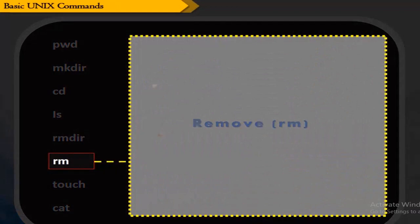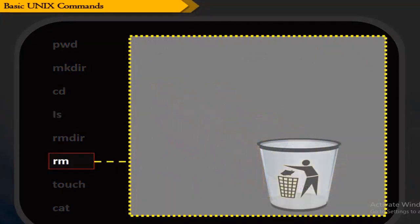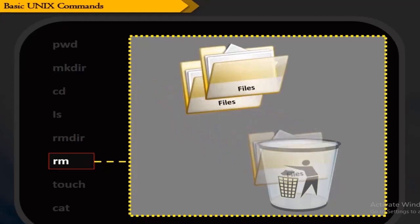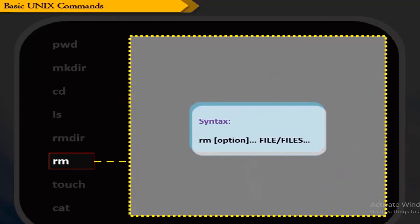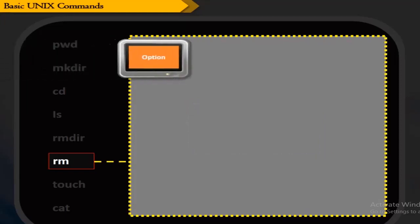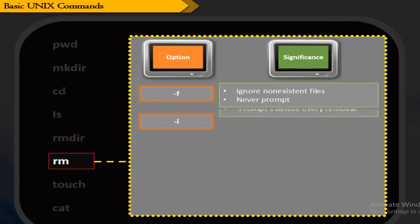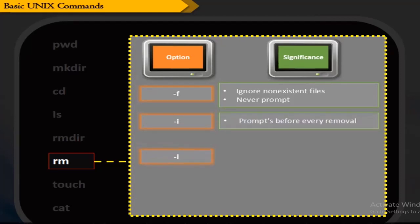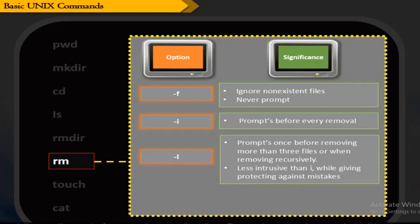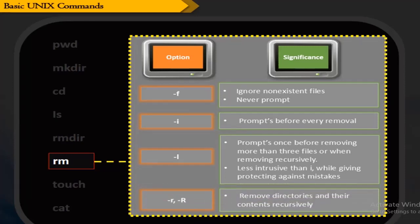rm stands for remove. This command is used to remove files or directories. rm can be used to remove multiple files together. The -f (force) option ignores non-existent files and never prompts. The -i option prompts before every removal. The -I option prompts once before removing more than three files or when removing recursively — less intrusive than -i but still provides protection against mistakes. The -r (recursive) option removes directories and their contents recursively.